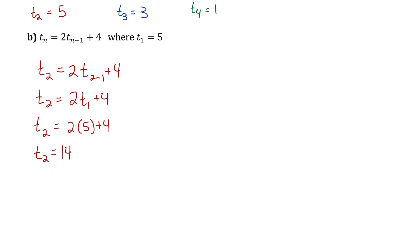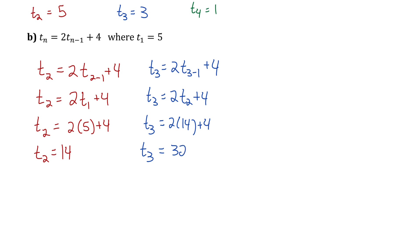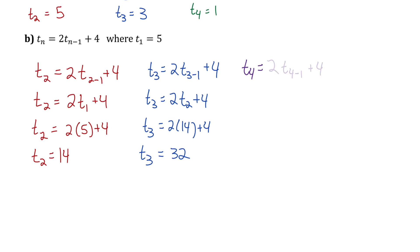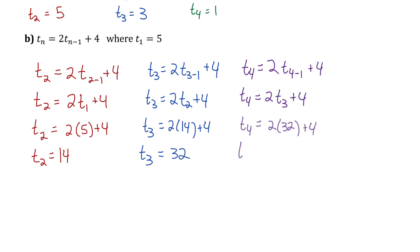Term 2-1 just means term 1, the previous term. The question gives me term 1 — it's 5 — so I'll replace term 1 with 5, and I figure out the value of the second term is 14. Now that I have term 2, I can calculate term 3: 2 times term 2 plus 4. Term 2 is 14, so term 3 is 32. Lastly for term 4: 2 times term 3 plus 4. Term 3 is 32, so term 4 is 68.